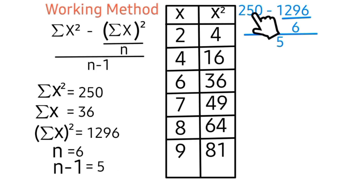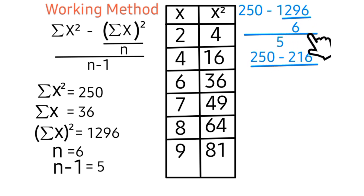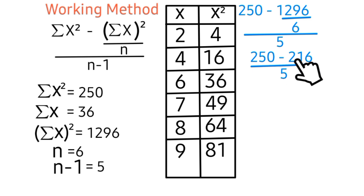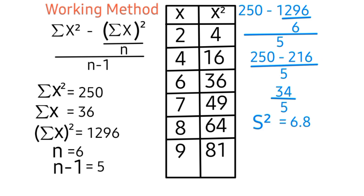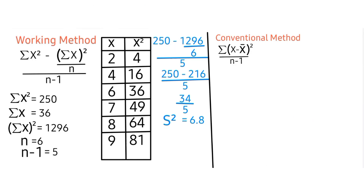Our n value is 6, all over n minus 1. We have 250 minus 1296 divided by 6, all over 5. That gives 250 minus 216, divided by 5, so 34 divided by 5 gives 6.8. The value of this sample variance using the working formula is 6.8.